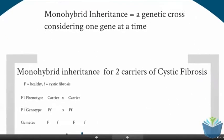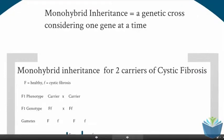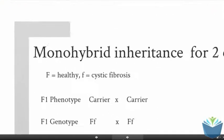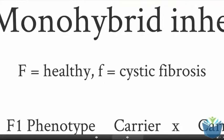An example of this is a monohybrid inheritance for two carriers of cystic fibrosis. In the previous video, we went over some of the symptoms and how cystic fibrosis is caused. It's an inherited disease and so it's received from your parents. Here, we're going to go through what a genetic cross would look like for two carriers of cystic fibrosis.